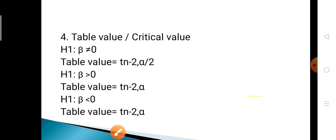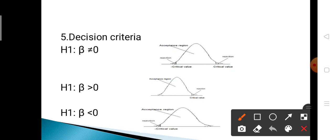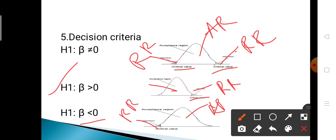The last step is the decision criteria. For the two-sided test, there are two rejection regions — one on the right and one on the left — with the middle as the acceptance region; the critical values are the positive and negative table values. For the one-sided right test, there is one rejection region on the right, with the positive table value as the critical point. For the one-sided left test, there is one rejection region on the left, with the negative table value as the critical point.